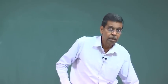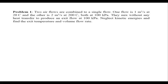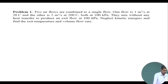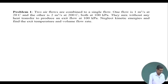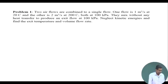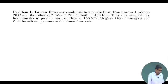Let us start with Problem 1, which states that two air flows are combined into a single flow. One flow is 1 meter cube per second at 20 degree Celsius and the other is 2 meter cube per second at 200 degree Celsius, both at 100 kilo Pascal. They mix without any heat transfer to produce an exit flow at 100 kilo Pascal. Neglect kinetic energies and find the exit temperature and volume flow rate.